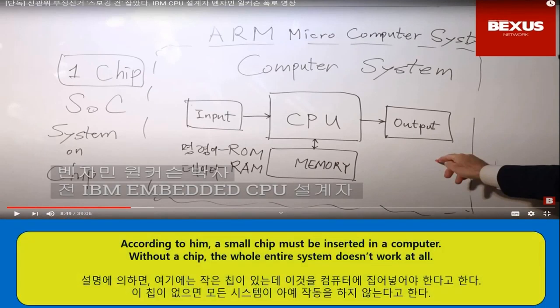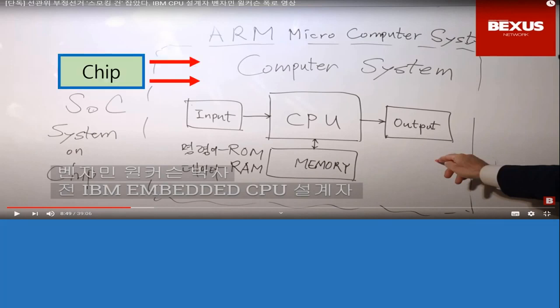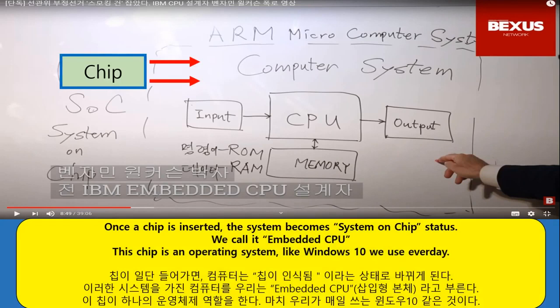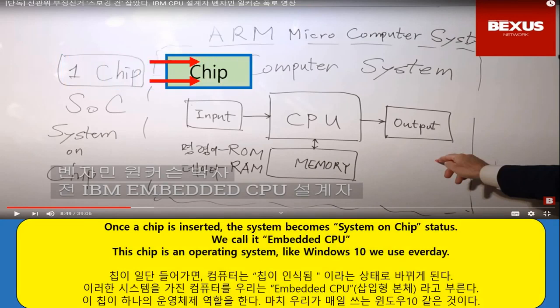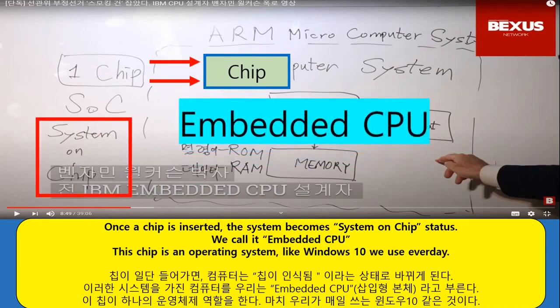According to him, a small chip must be inserted in a computer. Without a chip, the whole entire system doesn't work at all. Once the chip is inserted, the system becomes what he calls a chip-status system. We call it Matic CPU. This chip is an operating system, like Windows 10 we use every day.